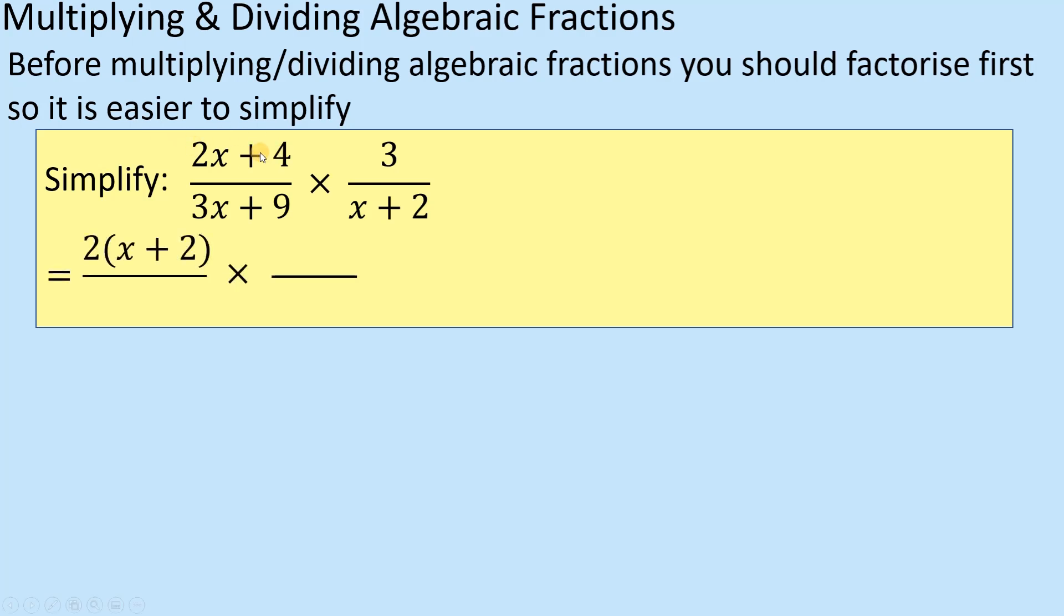Right, so let's factorize the top bit. Well the 2 appears in both of these two things, so if I take the 2 outside the bracket, then I've got an x inside and then you divide that one by 2, it leaves me with plus 2. So 2 bracket x + 2. So that's factorized. And again, if you're not quite sure how I'm factorizing, then please look at previous videos about factorizing expressions.